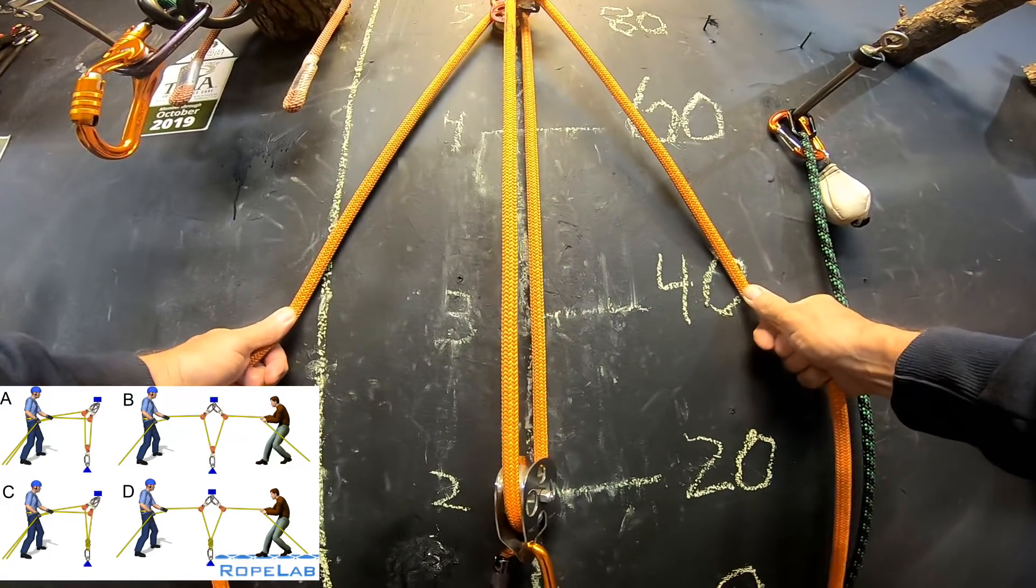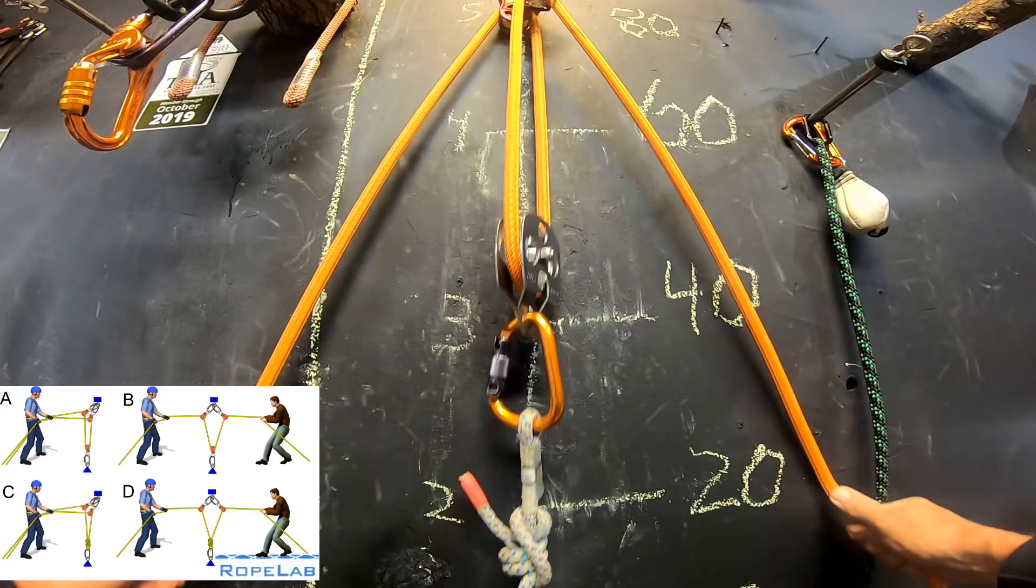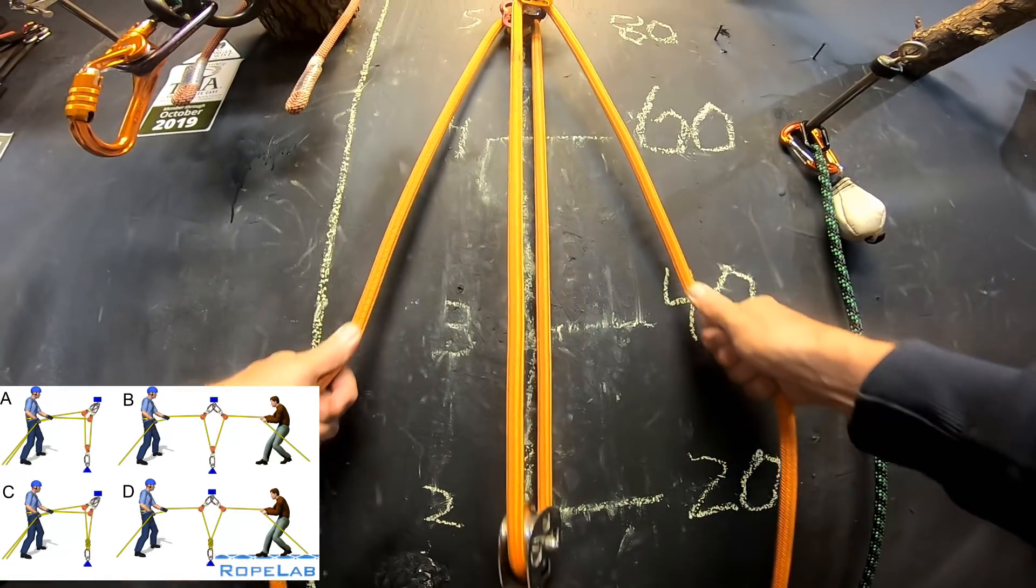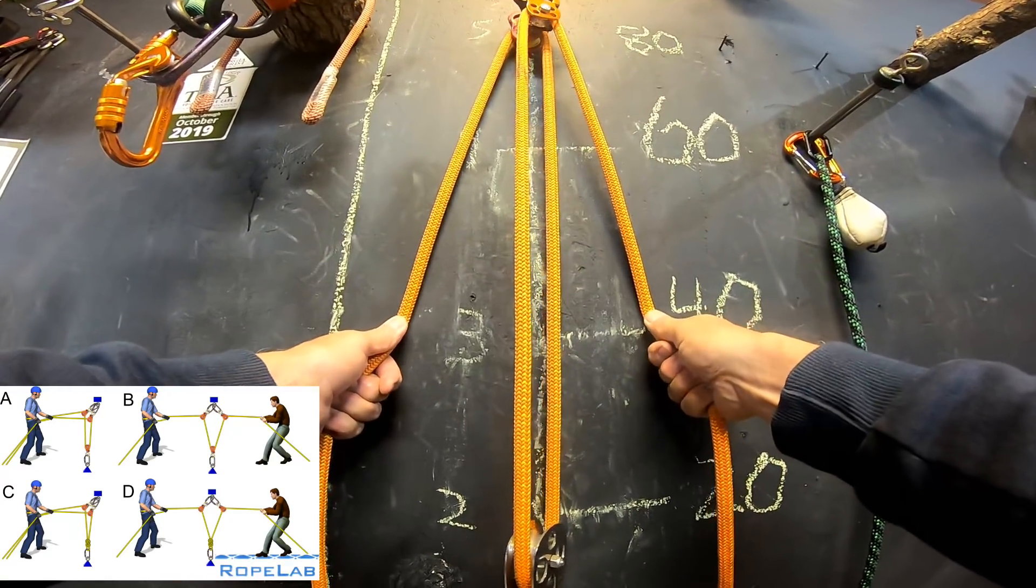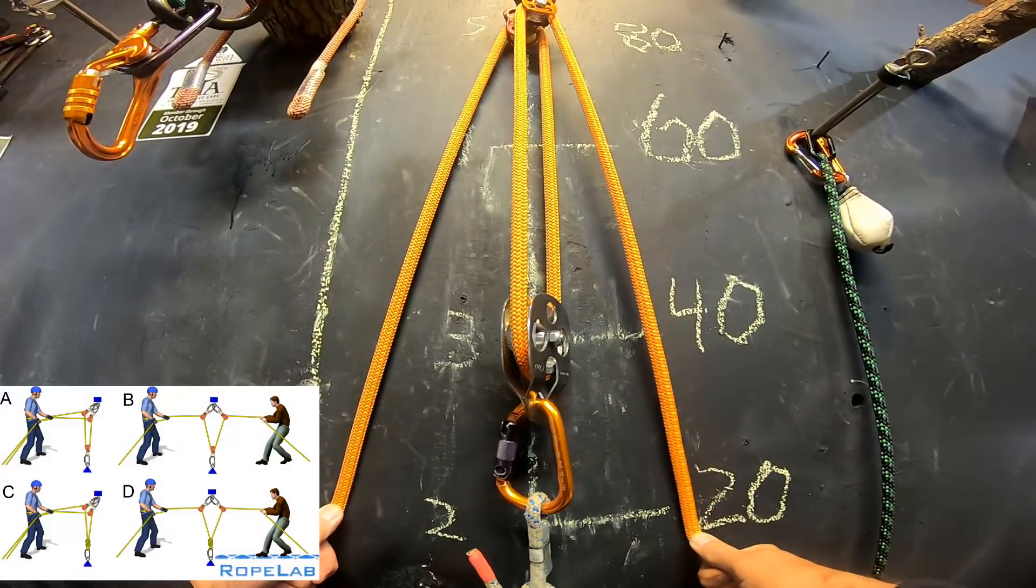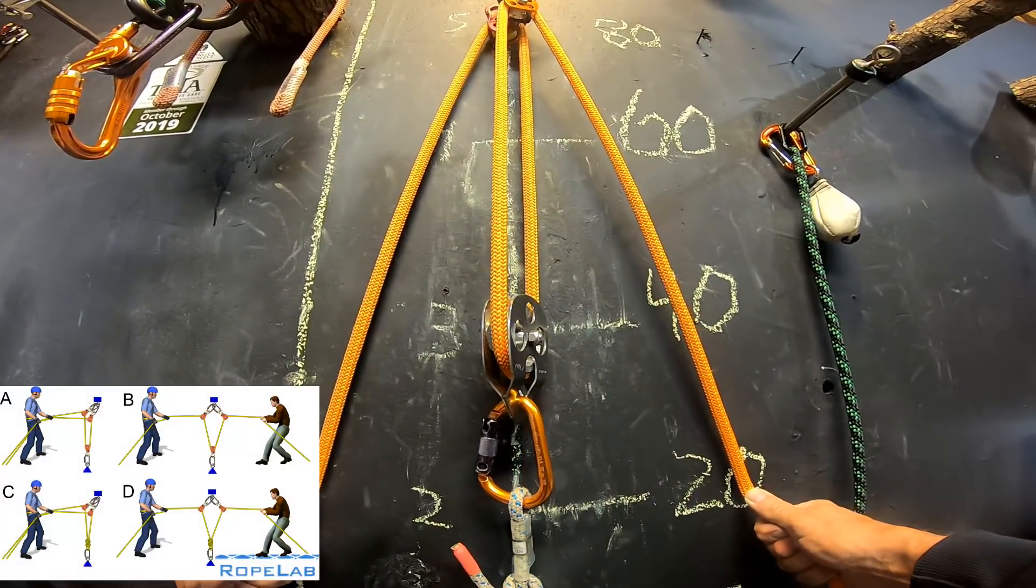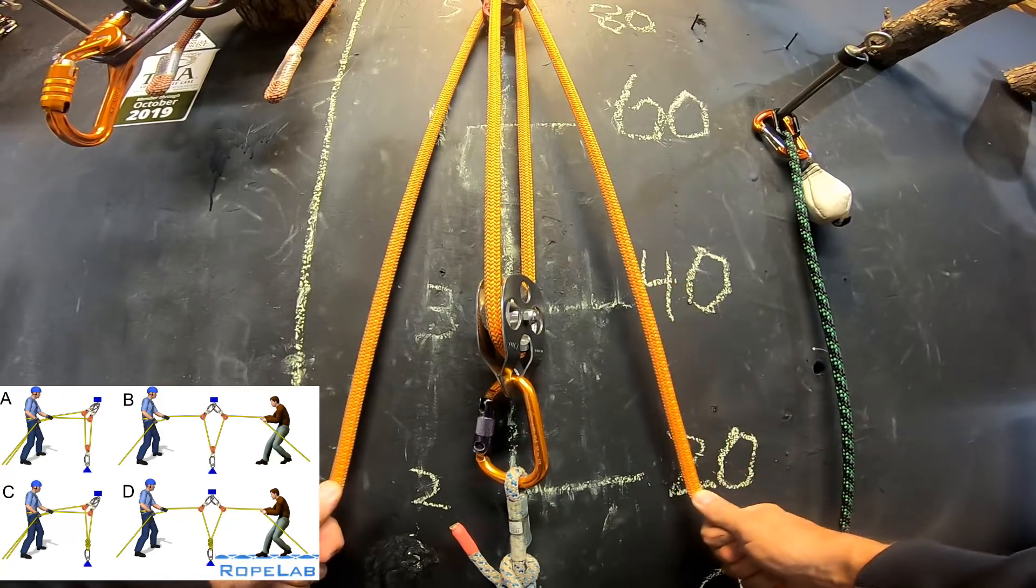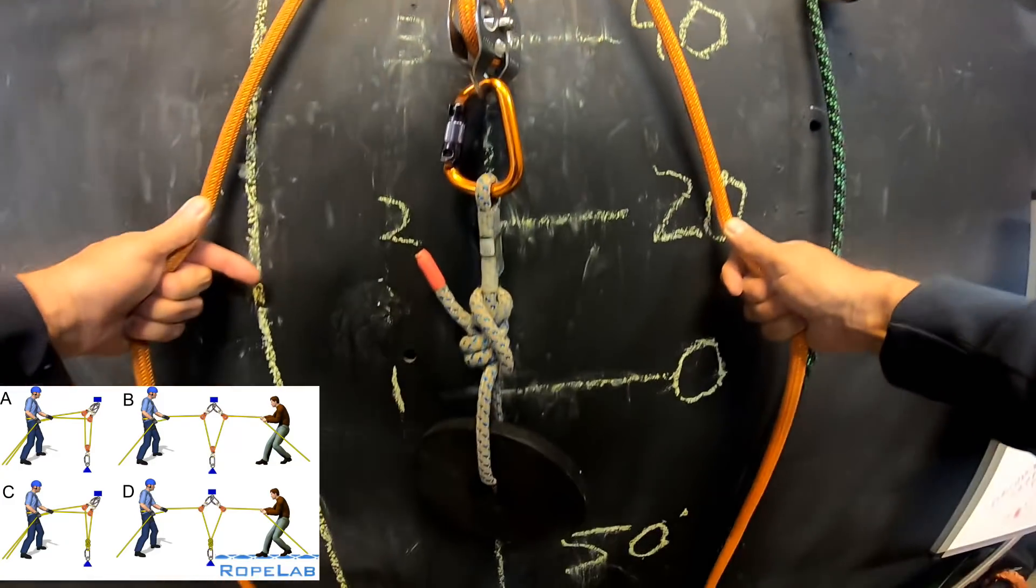If they both pull together, there is no mechanical advantage. In other words, if they come down a foot, that goes up a foot. But they have to do it together so that there's a shared load. So they're each taking half of that load.